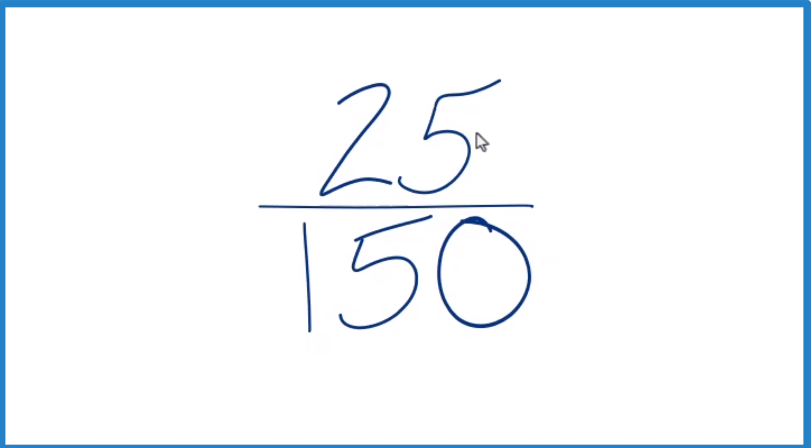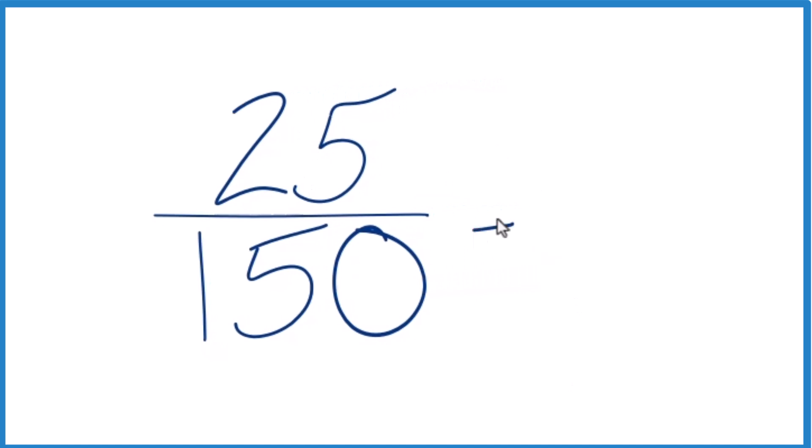25 will go into itself and 150 evenly. So 25 divided by 25 equals 1. 150 divided by 25: 25 goes into 150 six times. 6 times 25 equals 150.